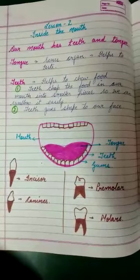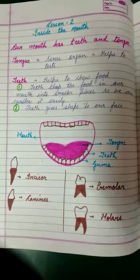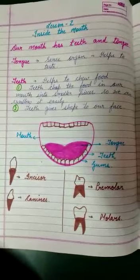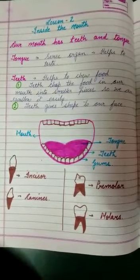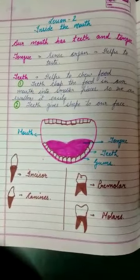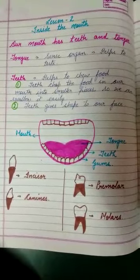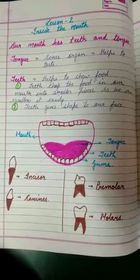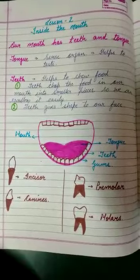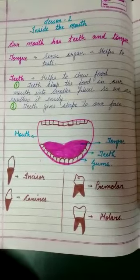Good morning students. In the previous video, I have told you about the functions of teeth, the structure of teeth, and the four different types of teeth: incisors, canines, premolars, and molars.